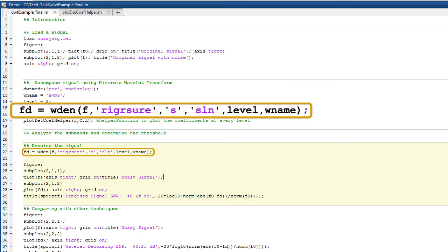The function wden performs a multi-level decomposition of the input signal, computes and applies the threshold to the detail coefficients, reconstructs the signal with the new detail coefficients and provides it as an output.